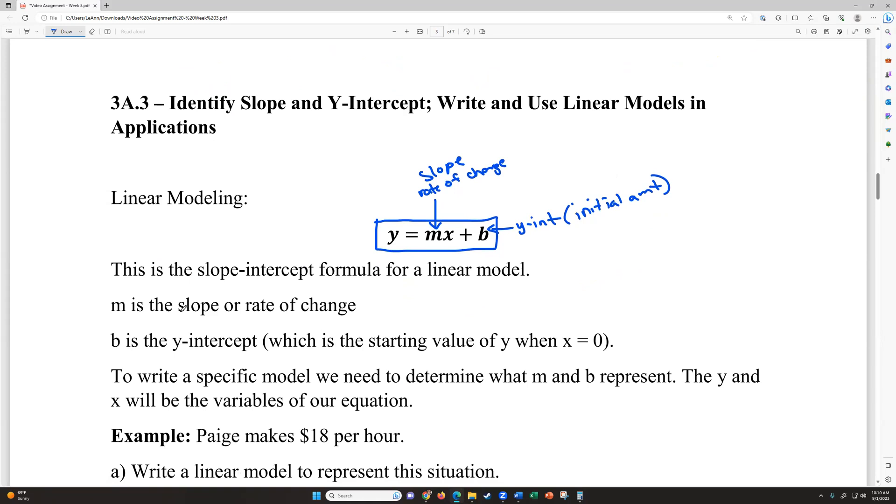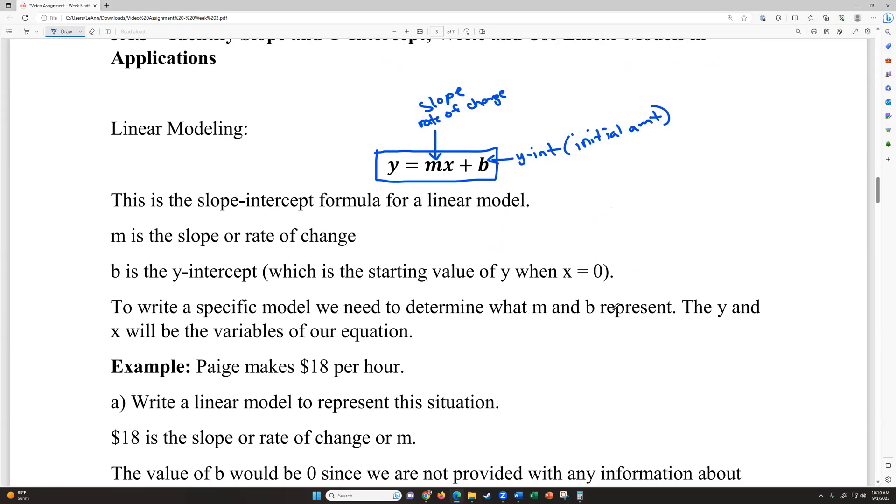And b is called the y-intercept in algebra, but it's our initial amount when we think about it in everyday words. M is the slope or rate of change, b is the y-intercept, which is the starting value of y when we have zero x's. So when we don't have anything, what would be our starting value? So to write a specific model, we need to determine what m and b are going to represent. And remember, y and x are just going to be variables. So we're going to be plugging in the m and the b. We're going to leave the y and x as letters.